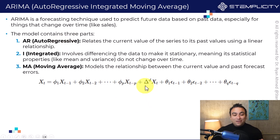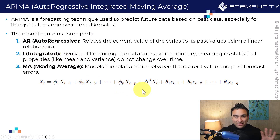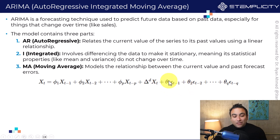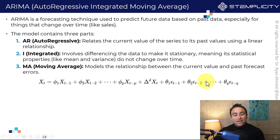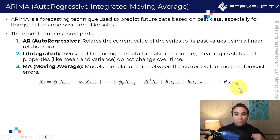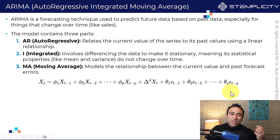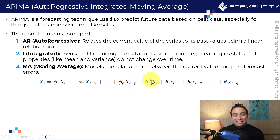There is also d of Xt, which is the integrated piece, and I'm going to cover that in detail coming up next. The last piece involves theta 1 times error t minus 1, plus theta 2 times error t minus 2, and so on up until the value of q. So when we perform hyperparameter tuning to the ARIMA model, we have three parameters we can play with: p, d, and q.